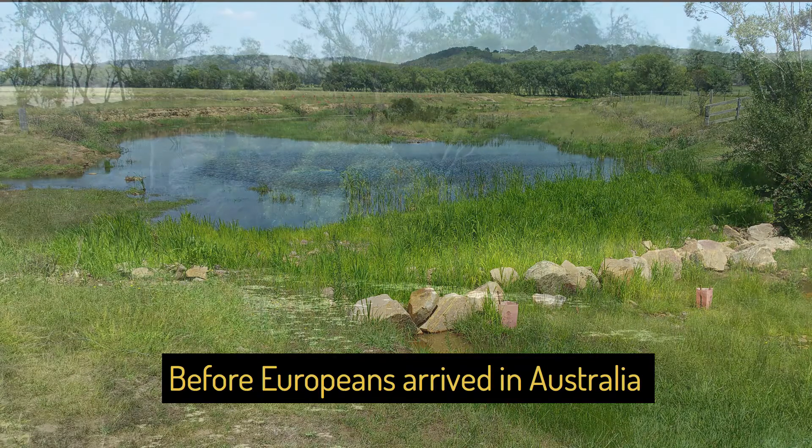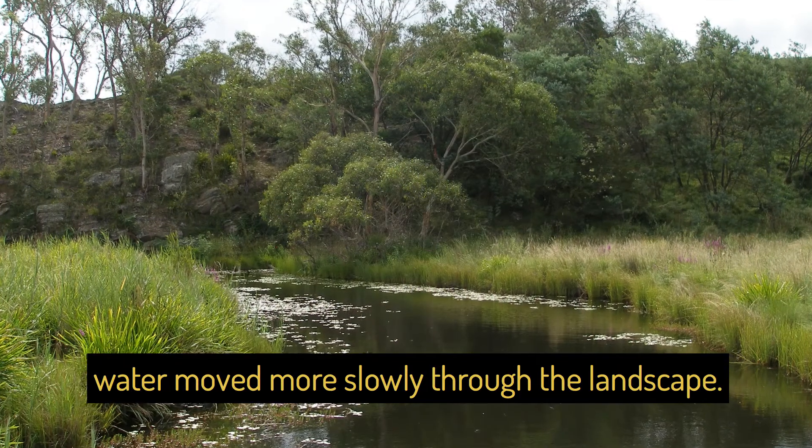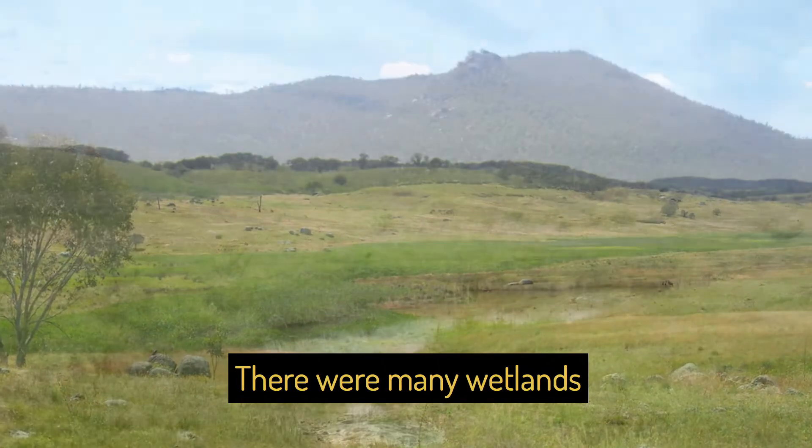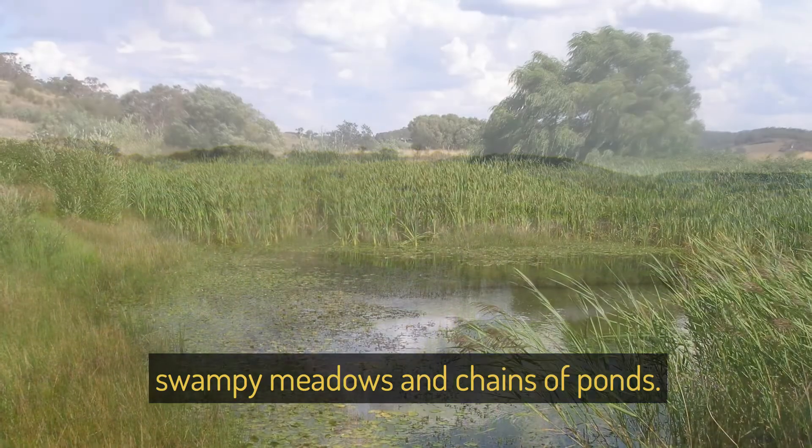Before Europeans arrived in Australia, water moved more slowly through the landscape. There were many wetlands, swampy meadows and chains of ponds.